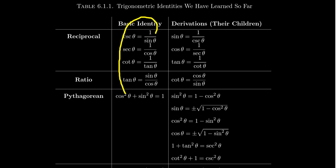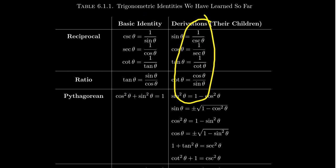When you look at this table, you have one column for the basic identities and another column called the derivations — the children of these. It turns out there is a litany of trigonometric identities and a lot of symmetry when it comes to trigonometric functions. It would be impractical to expect a student to memorize every possible trigonometric identity. But with a certain small amount of critical-mass identities, we can derive all the other trigonometric identities from them.